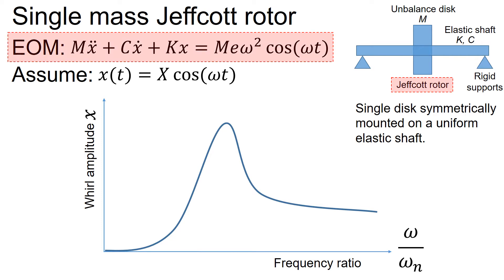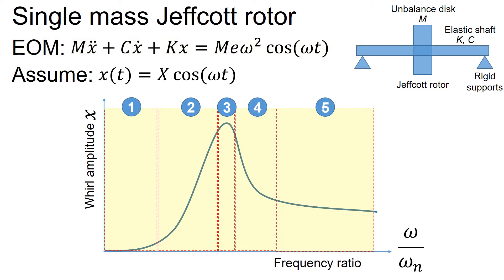Assuming a single mass Jeffcott rotor, you could write an equation of motion shown on the top left. Based on this equation, you could draw the rotor response plot shown on the bottom figure. We are going to look into the five different areas of interest as dissected below in the rotor response plot.